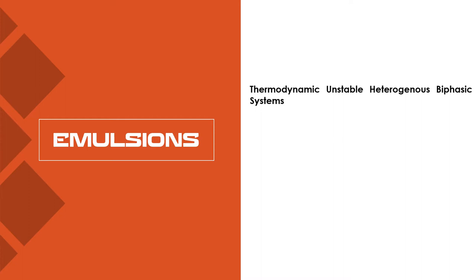There are two types of systems. One is monophasic, the other one is biphasic. When you say monophasic, a system that is having two phases where one is miscible with the other — it is also called a homogenous system. A biphasic system consists of two phases where one is immiscible with the other, also called a heterogeneous system.